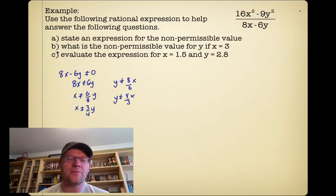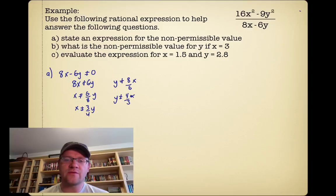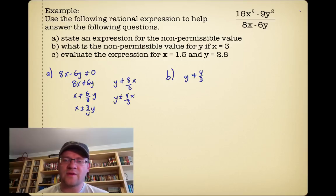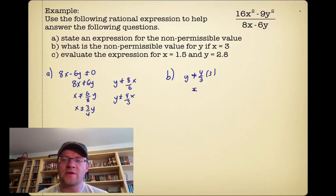Part B asks: what is the non-permissible value for y if x equals 3? We use our expression: y cannot equal four-thirds times x. Substituting x equals 3, that means y cannot equal four-thirds times 3, which means y cannot equal 4.